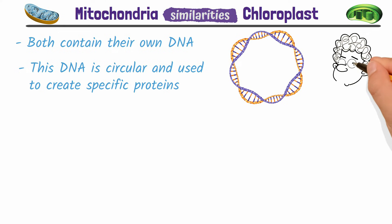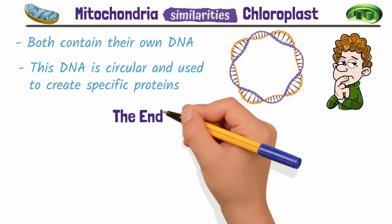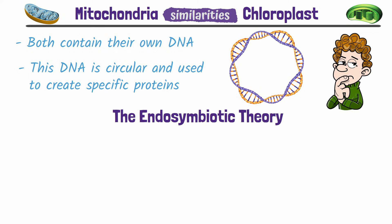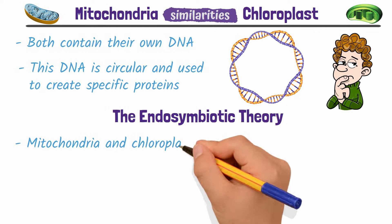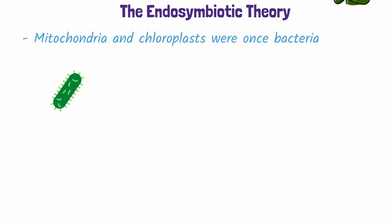Why do mitochondria and chloroplasts have their own DNA? Well, that brings us to our next key similarity: the endosymbiotic theory, which, in my opinion, is one of the gnarliest scientific theories out there. The endosymbiotic theory posits that mitochondria and chloroplasts were once bacteria that lived as single-cell organisms separate from any other organism. This is why they have their own DNA.